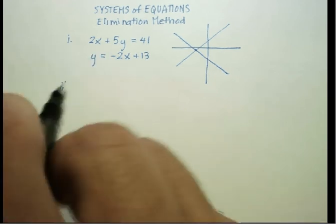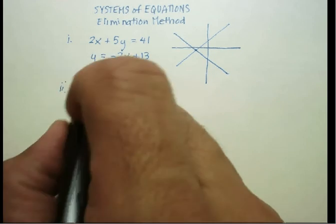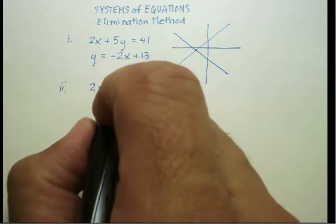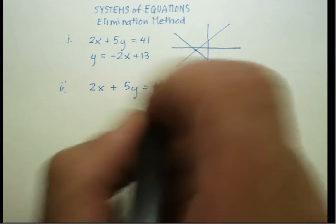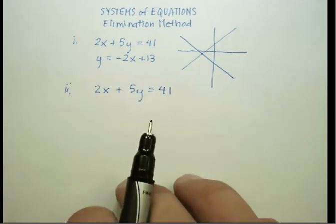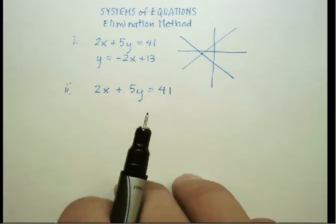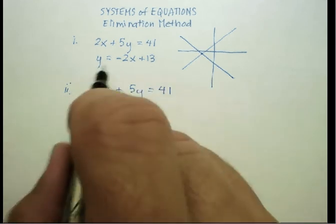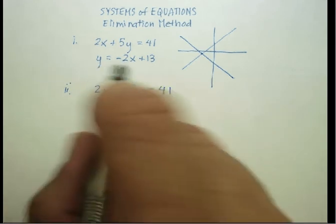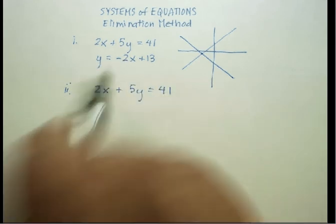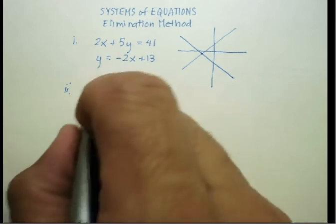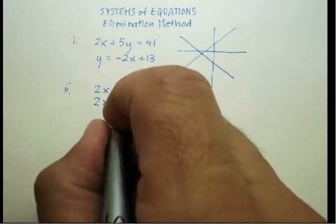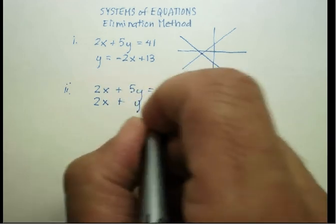I usually like to start my equations in what's called the standard form. The standard form is when the x and the y are on the same side of the equal sign. Now with the second equation, if I moved this x over to this side, I would have 2x plus y is equal to 13.